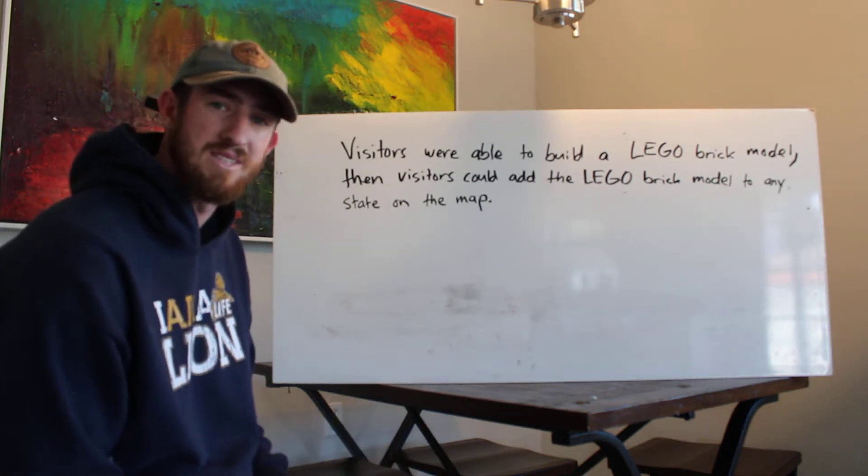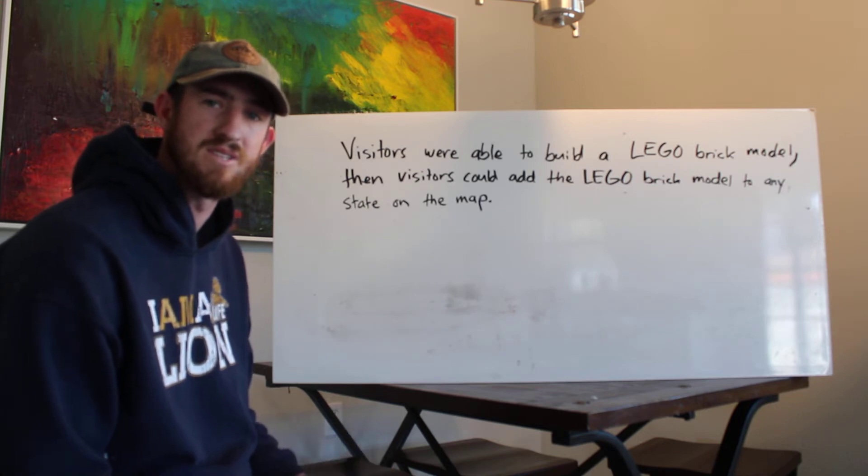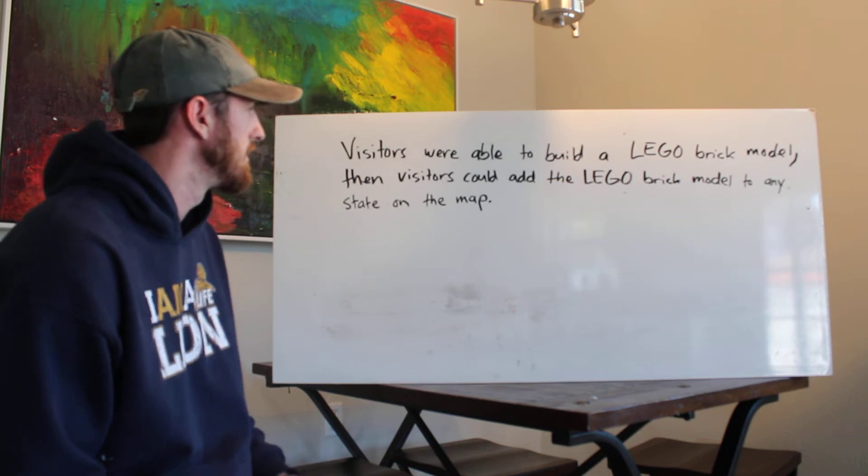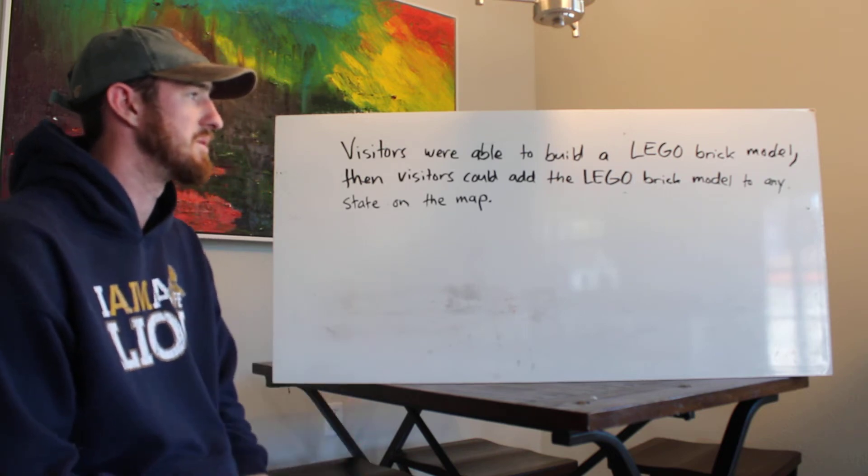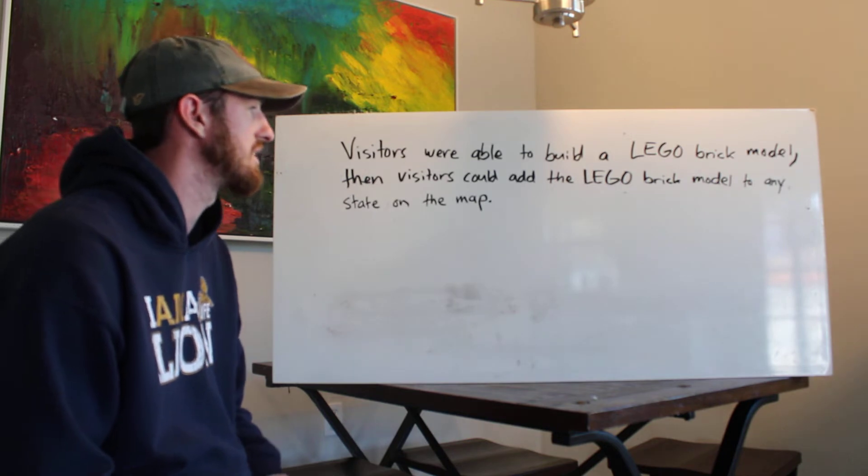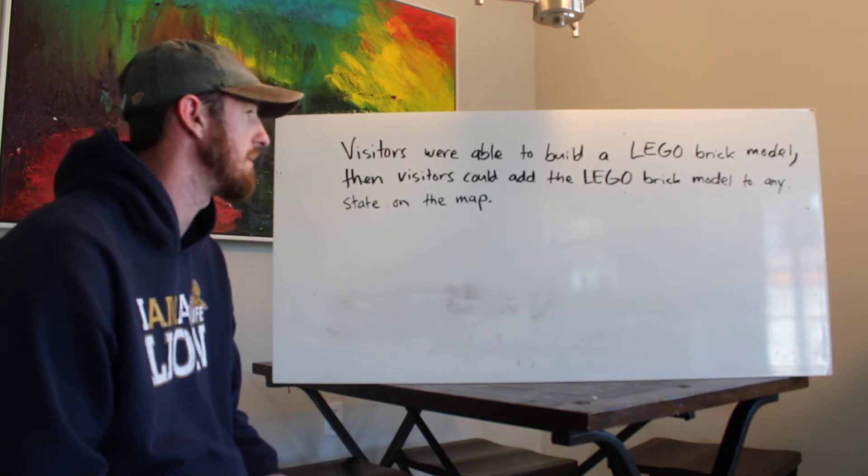I can't remember if it was asking what's the best way to combine these two sentences or what's the best revised version of this sentence. But it says visitors were able to build a Lego brick model comma then visitors could add the Lego brick model to any state on the map.